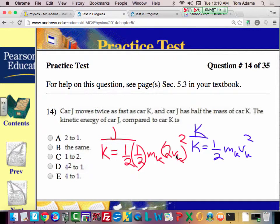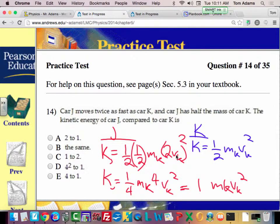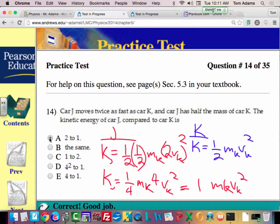Alright, so now algebraically we're going to clean this up and see what we get. So double, two to one. So it says, is it two to one or one to two? Two to one. So compared to K, J compared to K is two to one.